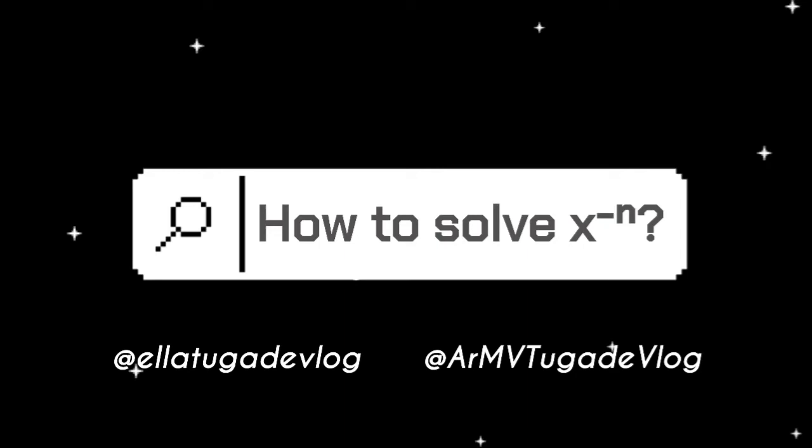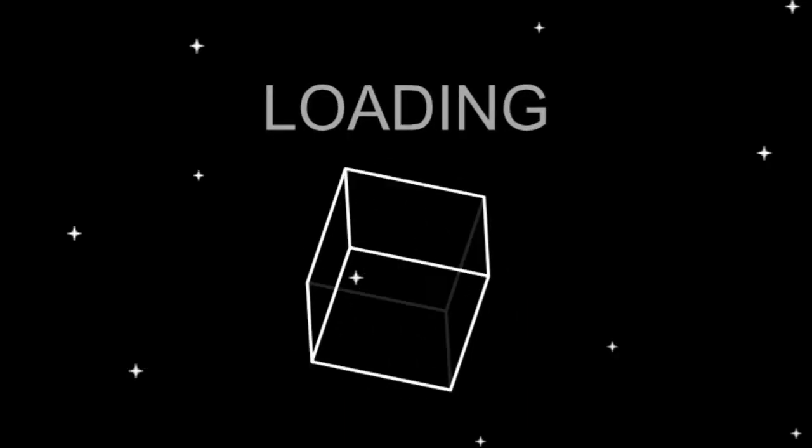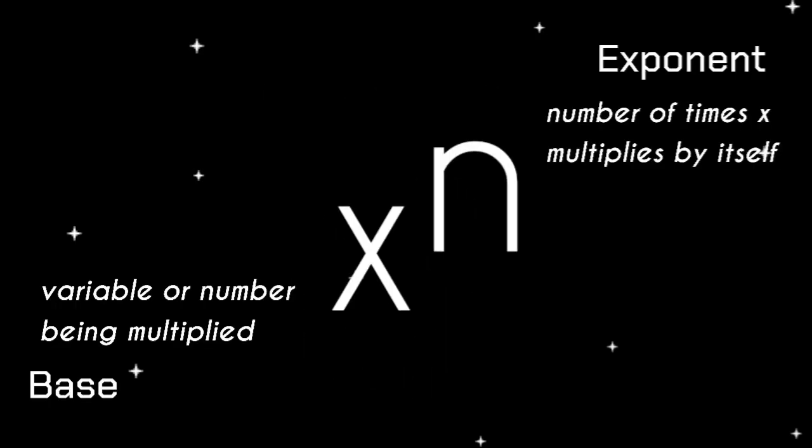How to solve x raised to the power of negative n? First, let's go back to the parts of a power of a number. There is the exponent, or n, which is the number of times x multiplies by itself, and the base, or x, which is the variable or number being multiplied.